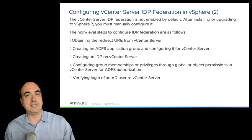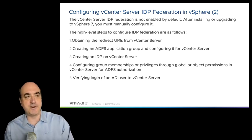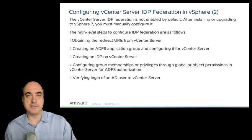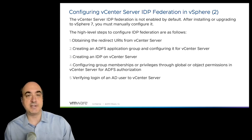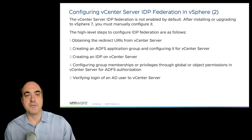Now you can go back to vCenter and create an identity provider federation on vCenter. Part of that is filling in the wizard that requires the client ID just created by the application group in ADFS. Once you have that, you can start configuring group memberships or privileges through global or object permissions in your vCenter server for your ADFS authorization.